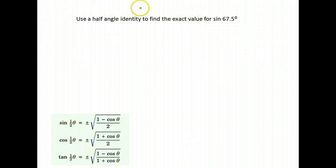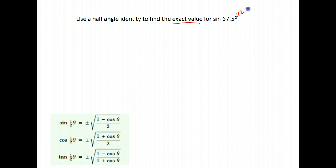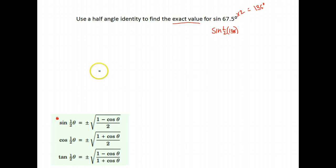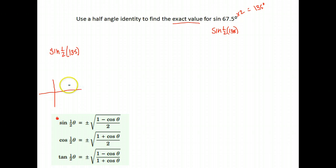Let's try another one. Use the half-angle identity to find the exact value for the sine of 67.5 degrees. Again, we take that angle times 2, and 2 times 67.5 gives us 135. So 67.5 is the same as 1 half of 135. We're using our half-angle identity for sine, finding the sine of 1 half of 135 degrees. We know the exact value for that — 135 degrees is this angle here.